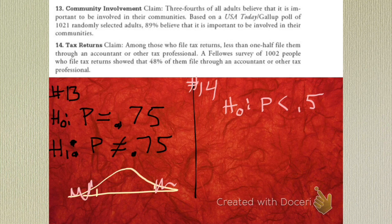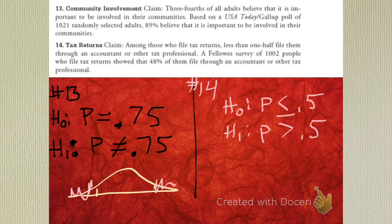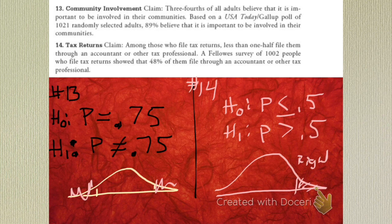What's our alternative? It's greater than or equal to 0.5. We're going to say the null gets the equals. Now this is a one-tailed test. And it goes the way the alternative is. This is a one-tailed, right-tailed test. We know which tail because of the rejection region. The direction of the tail is based on the rejection region. This was two-tailed because you could reject on both sides.